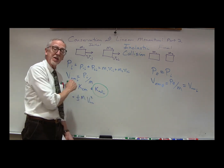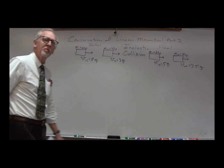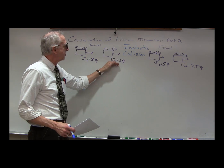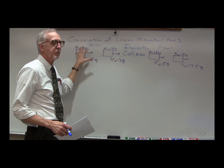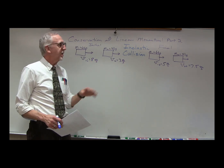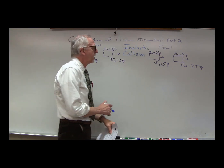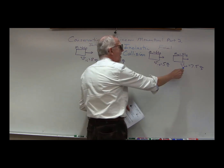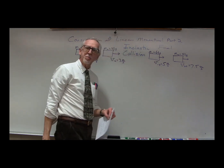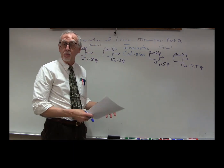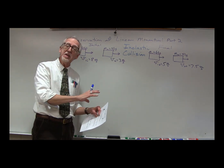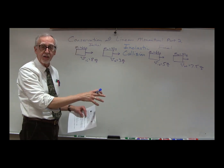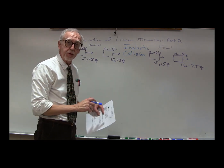Let's put some numbers in and see how that works out. We have a collision where M1 is 6 kilograms, M2 is 4 kilograms, V1 initial is 8 meters per second, and V2 initial is 3 meters per second — the initial situation is exactly the same as our elastic collision. However, the final situation is different: we still have the 6 and 4 kilogram masses, but now V1 final is 5 meters per second and V2 final is 7.5 meters per second. We'll go through this the same way we did for the elastic collision.